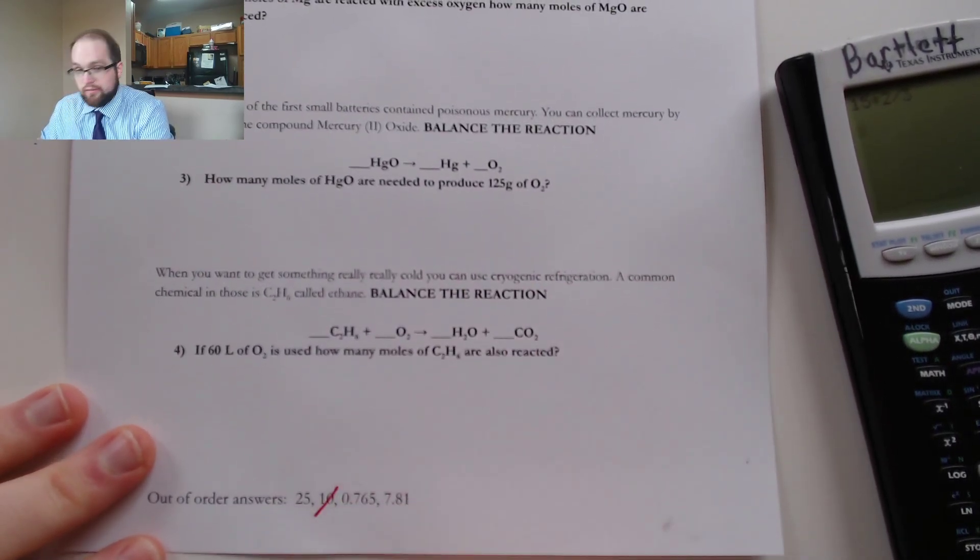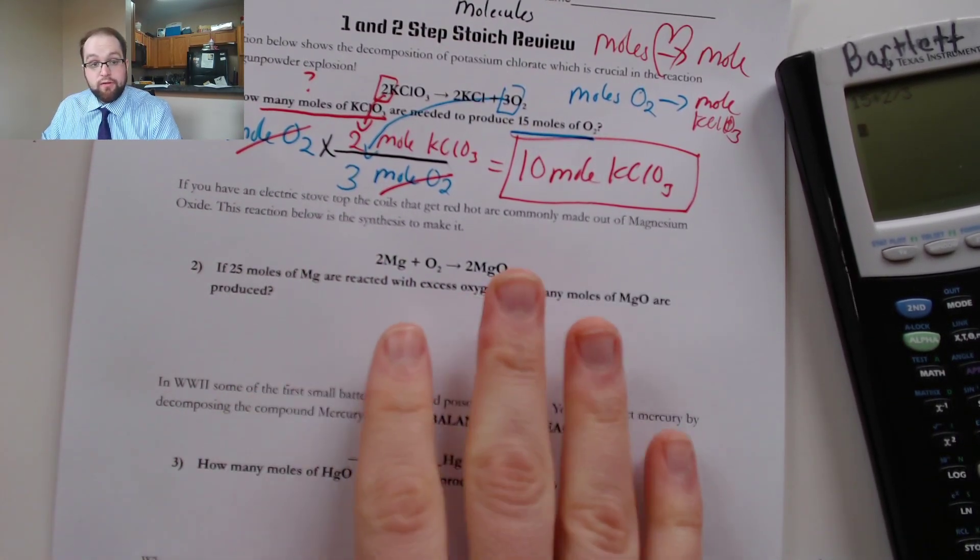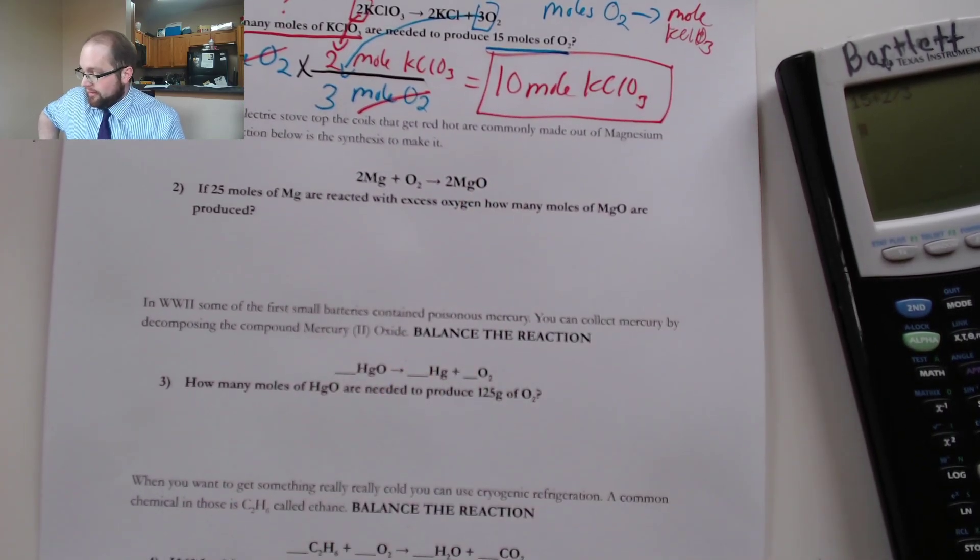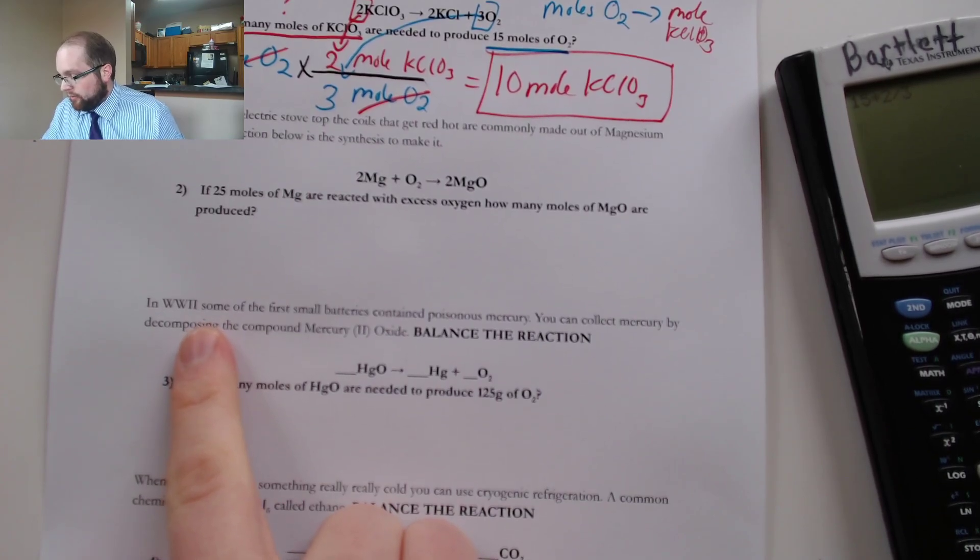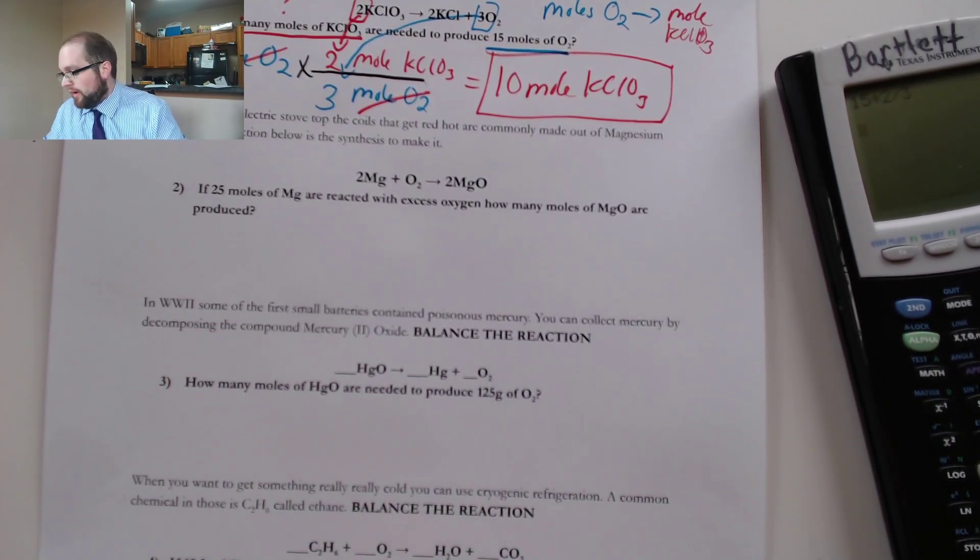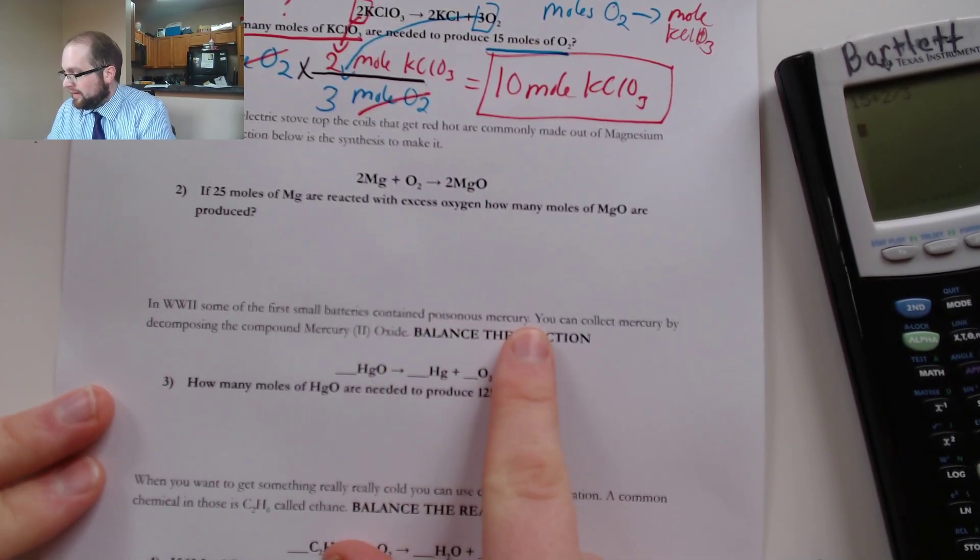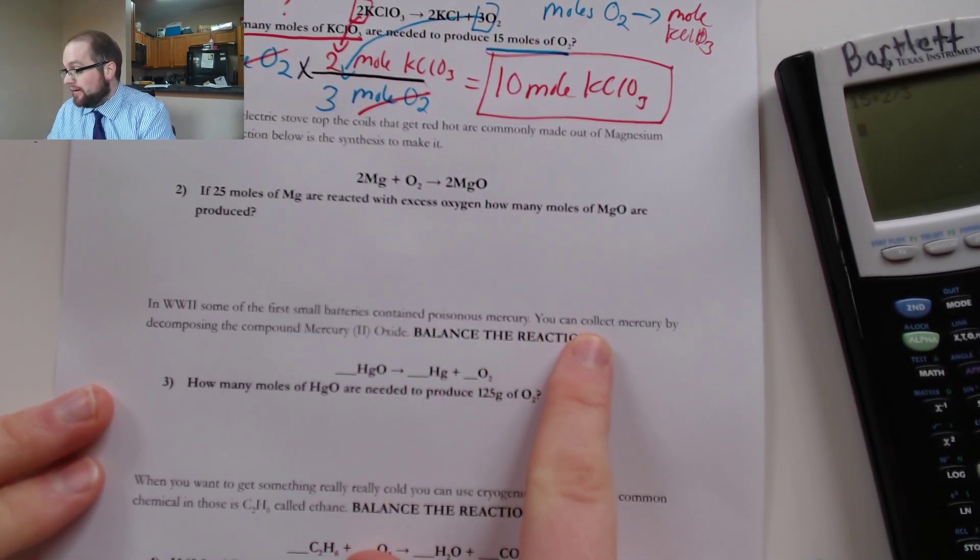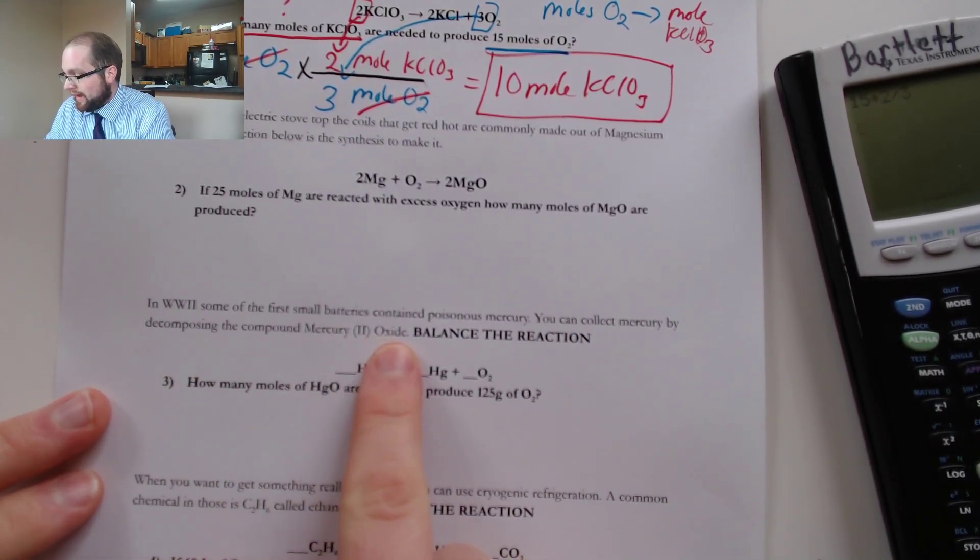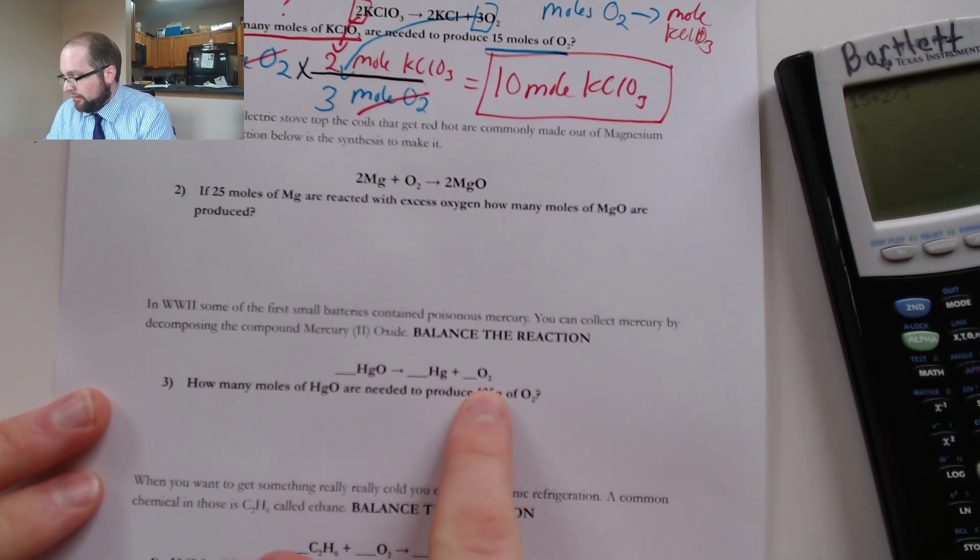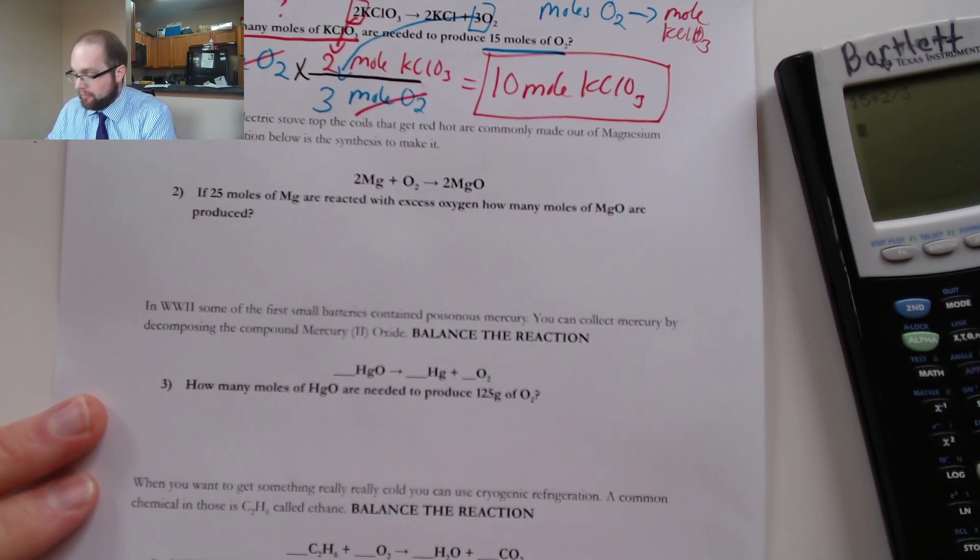Okay, why don't you try out number two on your own here, maybe you can pause the video and do that right now or you could follow along with me down here to number three where it talks about World War II, some of those first small actually portable batteries, and that involved poisonous mercury and thankfully they're not made of that anymore. You can collect mercury by decomposing mercury oxide and we need to actually balance an equation.